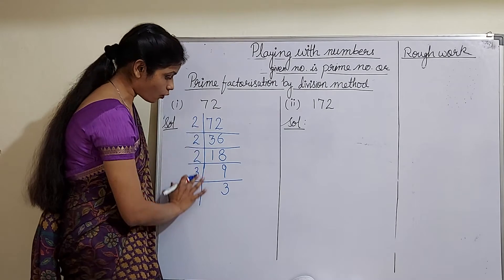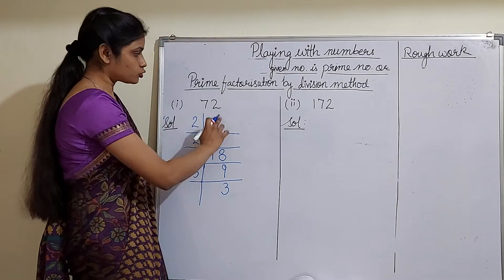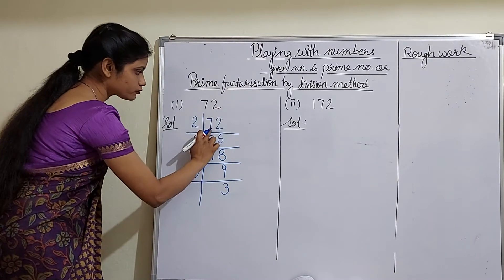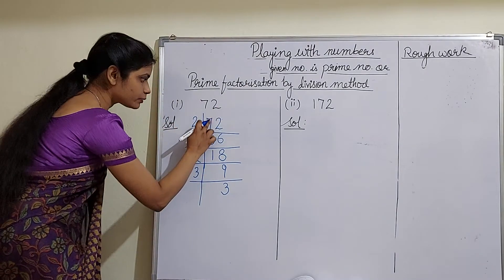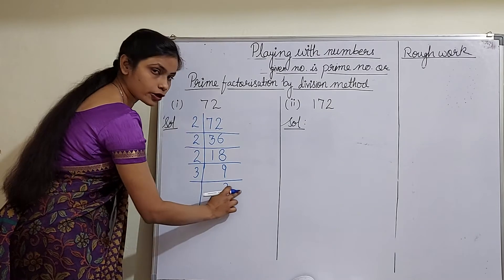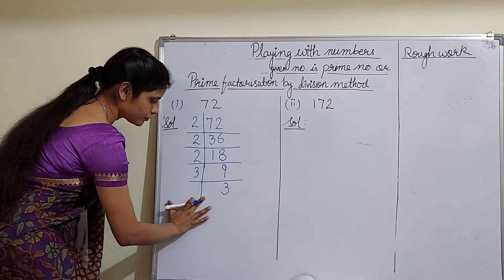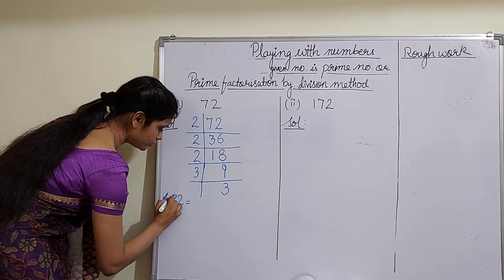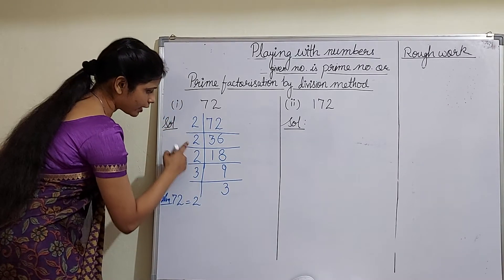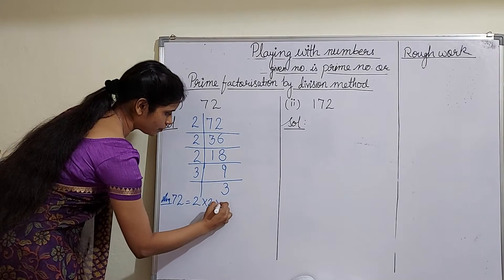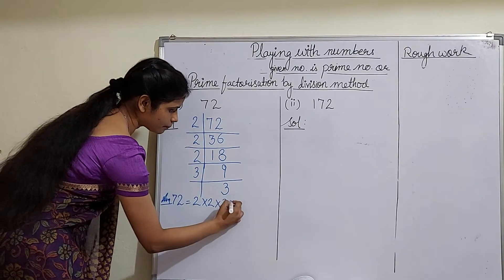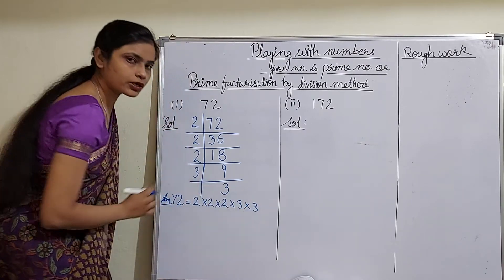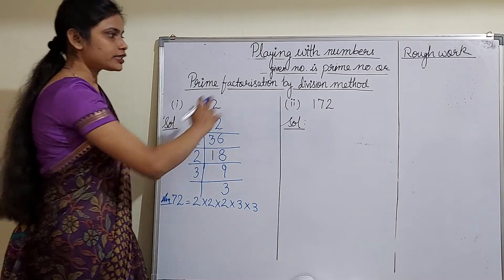Now you have got all the prime factors. So we can write 72 as its prime factorization — express this in the form of the product of its prime factors. So 72 can be written as 2 multiplied by 2, multiplied by 2, multiplied by 3, multiplied by 3. Let us take one more example.